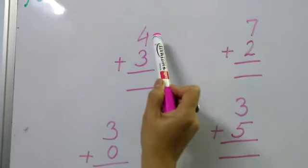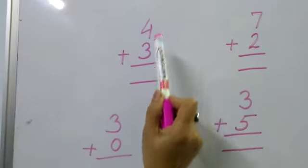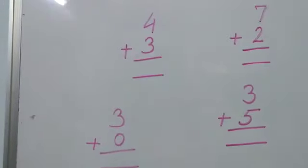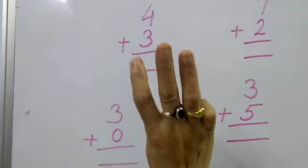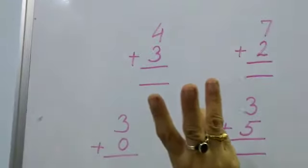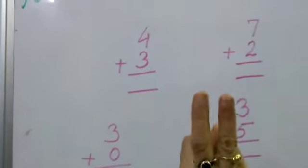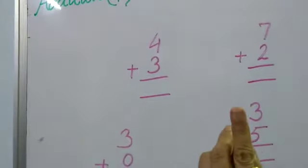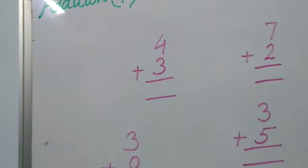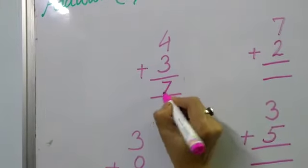So, upper number we will keep in mind and lower number 3, so we will stand 3 fingers. Now, what comes after 4? 5, 6, 7. So, answer is 7.